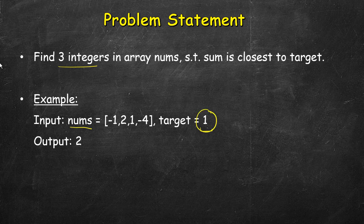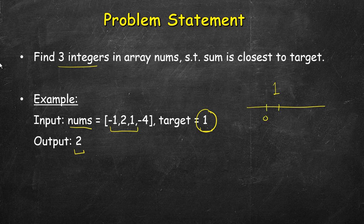We have to return the value of that sum. For example, if we have to pick three elements, the closest sum to 1 is 2. That would be minus one plus one is zero, plus two is two. If you take another combination like minus four, one, two, the sum is minus one. On the number line, the gap from 1 to 0 is 1, and the gap from 1 to minus one is 2, so 2 is closest. The difference is one.